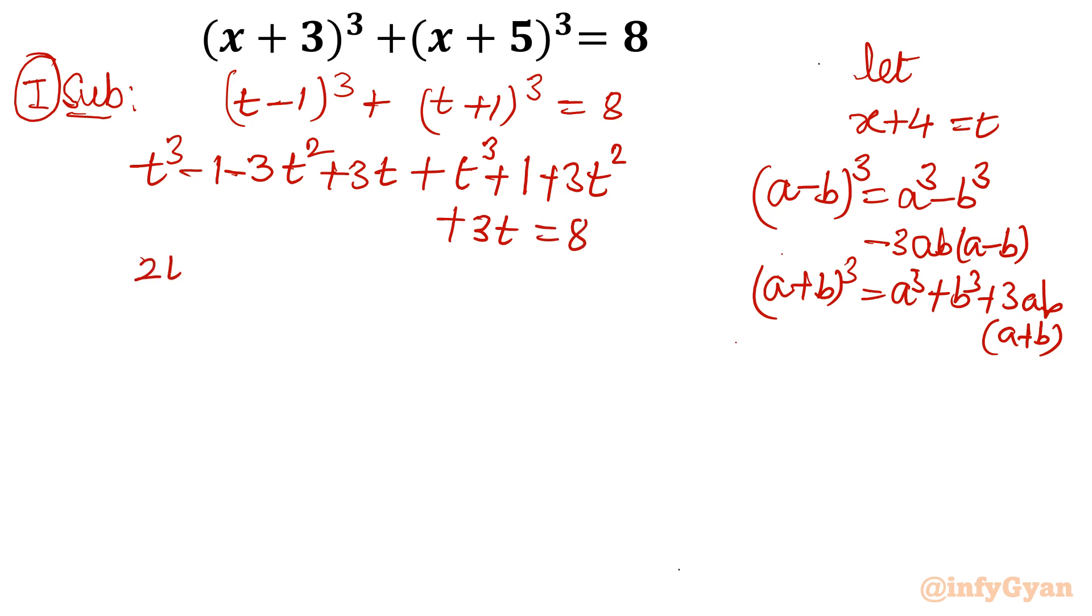So it will give us finally 2t cube plus 3t square minus 3t square will be zero, minus 1 plus 1 will be zero. So what is left? 2t cube plus 6t minus 8 equal to 0. Our equation will come out, divide by 2: t cube plus 3t minus 4 equal to 0.